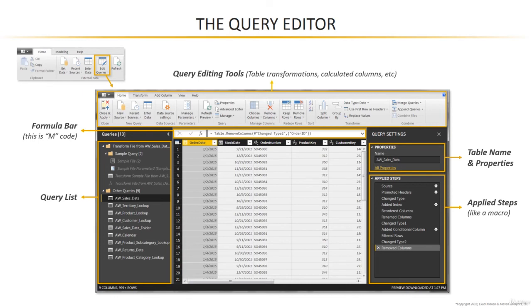You record it once and then you're good to go moving forward. Perhaps the most helpful thing is that none of this is set in stone — you can click the X next to any individual step to remove it, you can click through each applied step to visually see the impact it's having on your table, or you can click the gear icon on the right to modify or edit individual steps in the process.